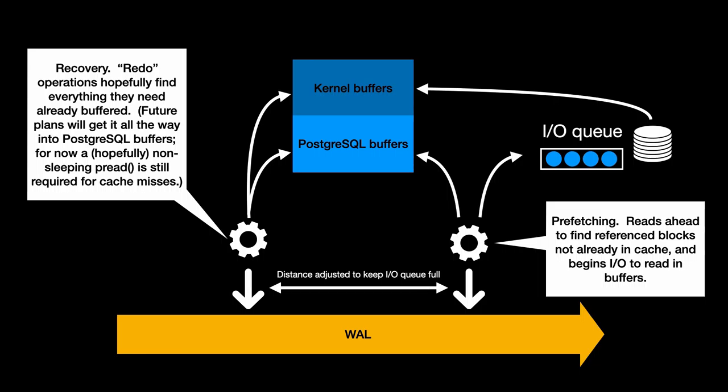This approach assumes that the storage system can execute more than one read at the same time, and you have to tell it — with a setting — how many parallel reads it should initiate. Since for now we don't have any completion event delivery to Postgres, we assume the asynchronous read is completed when we finally replay the log record that caused the read to be initiated. That's a conservative model of how many IOs are currently in flight.